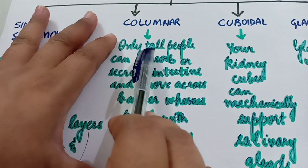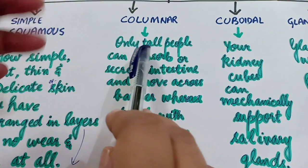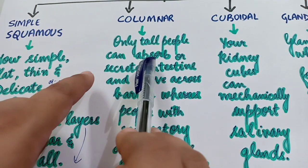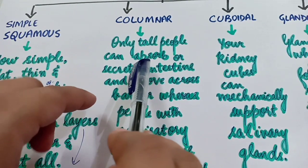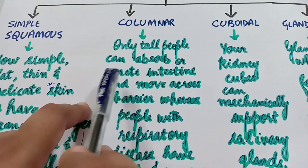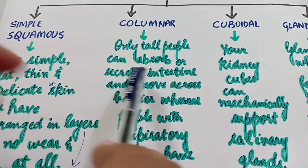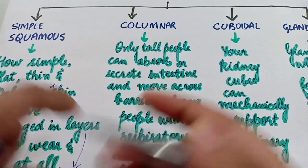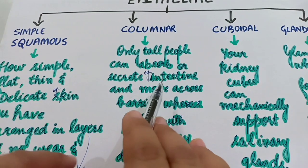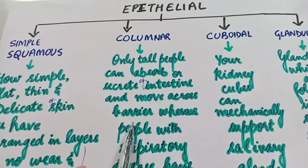Tall means that columnar epithelial cells are tall in nature — we can also say they are pillar-like. They are generally present in those organs which either have to absorb or secrete substances. In our body, the main place where absorption and secretion takes place is the intestine. So the example of columnar epithelial cells is the intestine, and this epithelium facilitates movement across the barrier.